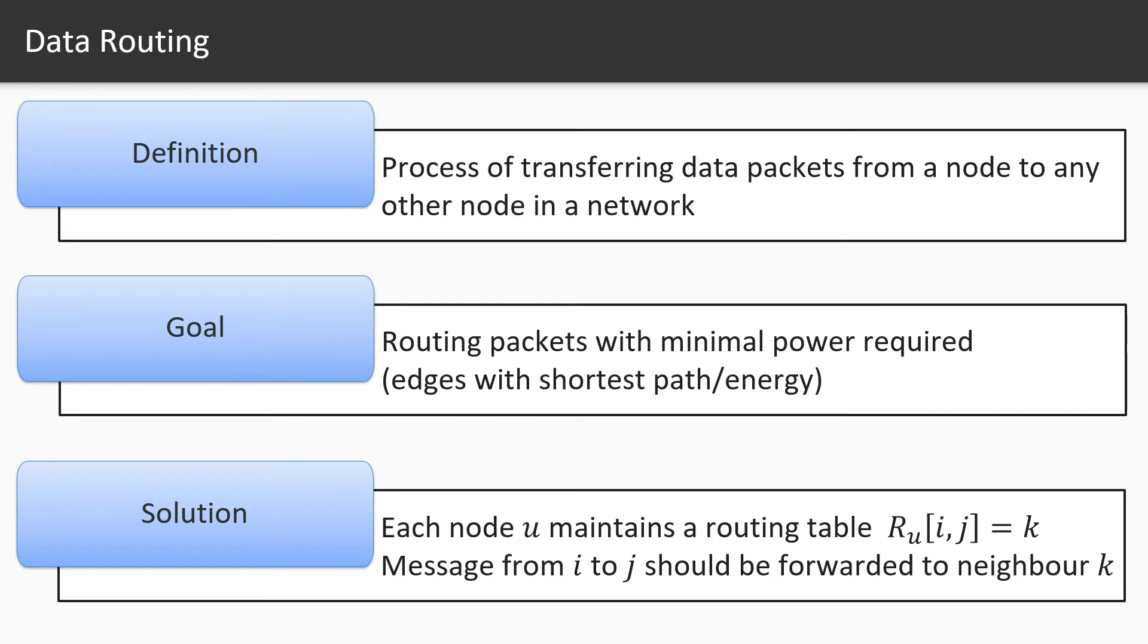Data routing is defined as a process of transferring data packets from a node to any other node in a network where the goal is to use such routing techniques that allow nodes to use minimum power during the data transferring.